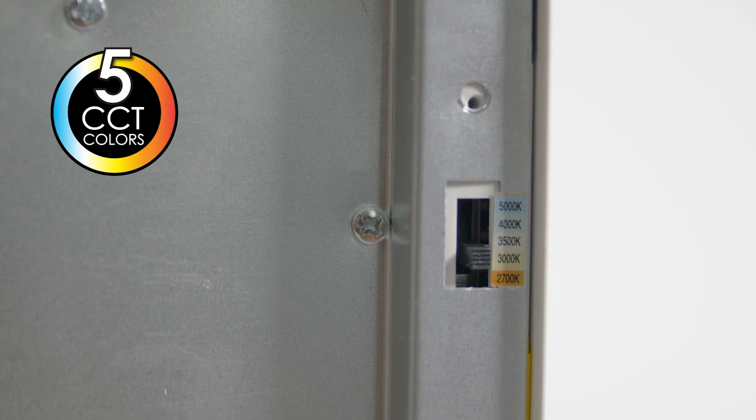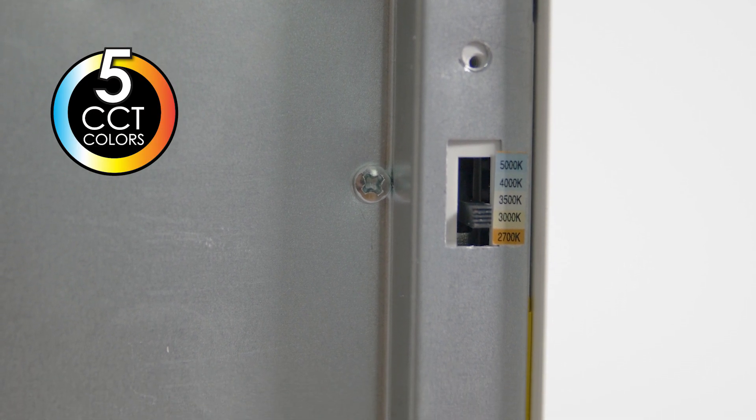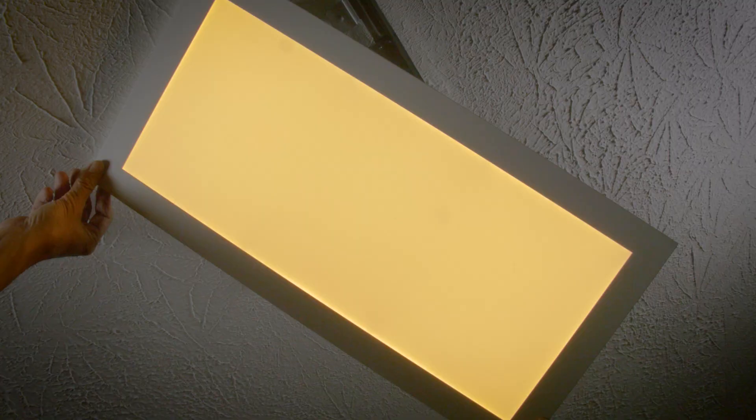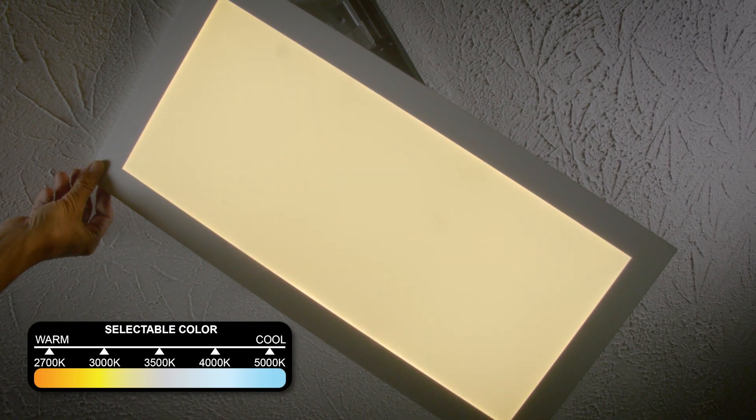It also has a built-in 5 CCT switch to adjust the Kelvin temperature of the light, giving you the flexibility to match the color of your Nuwatt lights with the rest of the lighting in your space.